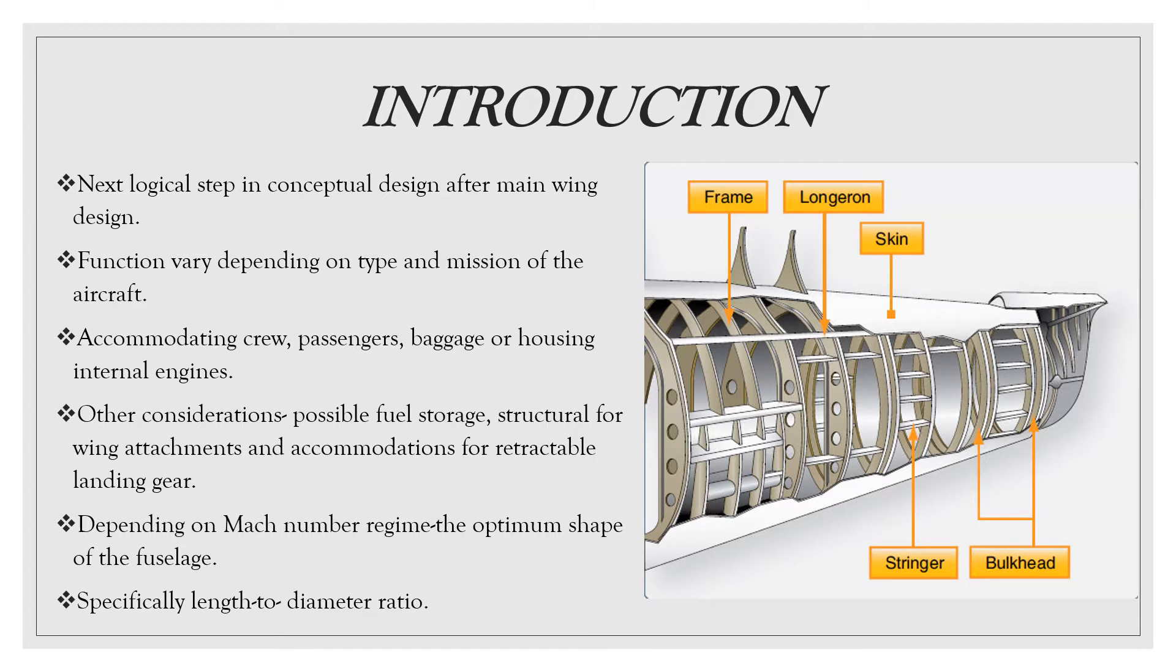Depending on Mach number regime, the optimum shape of the fuselage, or more specifically the length to diameter ratio, may be determined on the basis of minimizing the aerodynamic drag. If we consider subsonic aircraft, the ratio is historically far from the optimum and can be more easily determined using functions. But with respect to supersonic aircraft, the penalty for deviating from the optimum leaves very little room for comparisons.